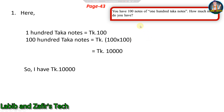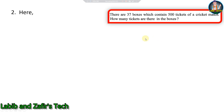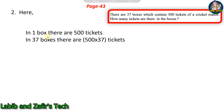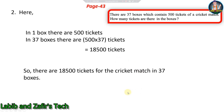Our second word problem from page 43: there are 37 boxes which contain 500 tickets of a cricket match, how many tickets are there in the boxes? In each box there are 500 tickets and there are 37 boxes, so this is multiplication. In 37 boxes there are 500 into 37 tickets, that is 18,500 tickets total for the cricket match.